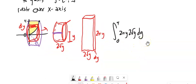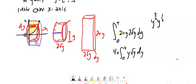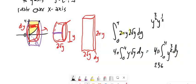Pulling out the constants — the 2 and the 2 — gives 4π ∫₀⁴ y · √y dy. Since y · √y = y^(3/2), this becomes 4π ∫₀⁴ y^(3/2) dy. You're in good shape from there — you get 256π/5, and the units are cubed.